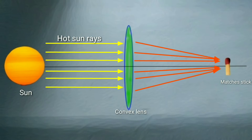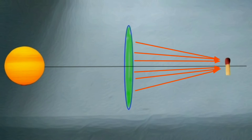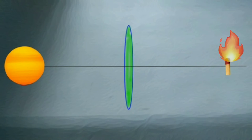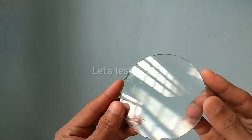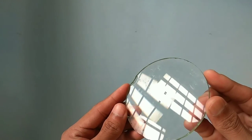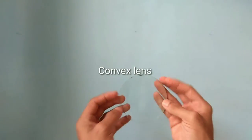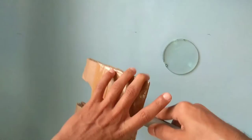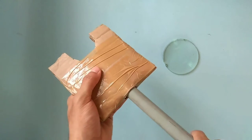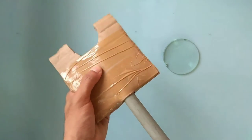A convex lens can focus sunlight to a point of certain intensity, which can be an image shape. Let's test it — using a convex lens and lens holder.